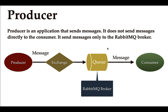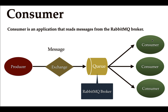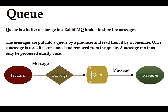A consumer is the application that reads messages from the RabbitMQ broker. Whenever a producer sends a message to the broker, the consumer reads that message. There can be multiple consumers subscribing to the RabbitMQ broker — for example consumer one, consumer two, consumer three — and whenever a producer sends a message, all these consumers can read it.